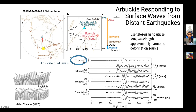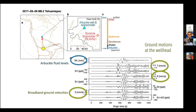We're using teleseisms — this is an example of the Arbuckle responding to surface waves from distant earthquakes. A map shows the location of the 2017 magnitude 8.2 earthquake in Mexico, with the direction that waves generally traveled toward the well. There's a zoom-in showing the well, some local faults, and the strain meter. The time series associated with this earthquake shows water levels in the Arbuckle, ground motions at the wellhead from the broadband seismometer rotated into the radial-transverse direction — T for transverse, R for radial — and also the vertical component.